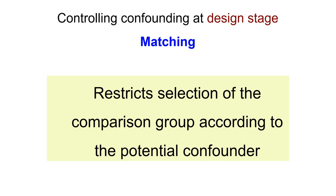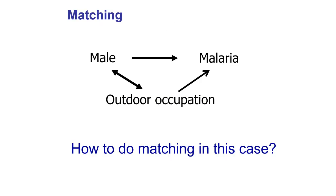Matching is another way of controlling for confounding at the design stage — it restricts selection of the comparison group according to the potential confounder. For example, in a case-control study of malaria where the exposure of interest is gender and outdoor/indoor occupation is a potential confounder: if you enroll a malaria case who is an outdoor worker, you would choose a control who is also an outdoor worker. This is matching on the potential confounder, given that occupation is not your exposure of interest.